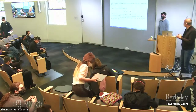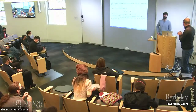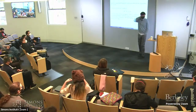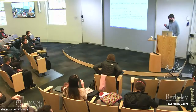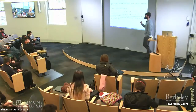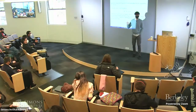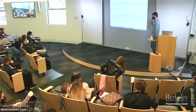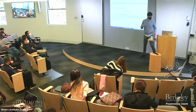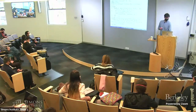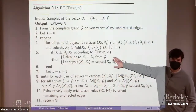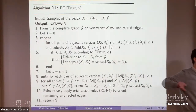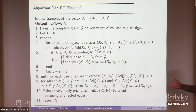Welcome back, everyone. Section two. So picking up where we left off: we introduced the PC algorithm as a kind of schematic for learning equivalence class of graphs. We said that in terms of the pseudo code, you plug in some conditional independence test and some significance level alpha in order to make your judgments of conditional independence.